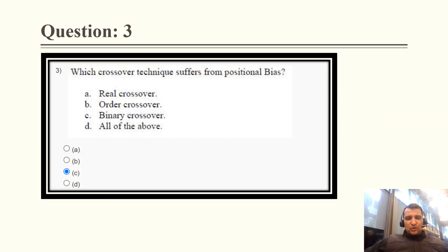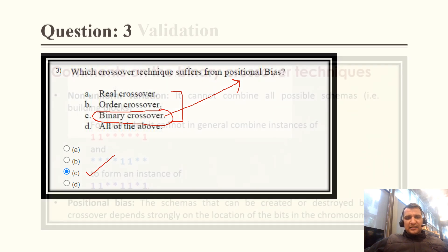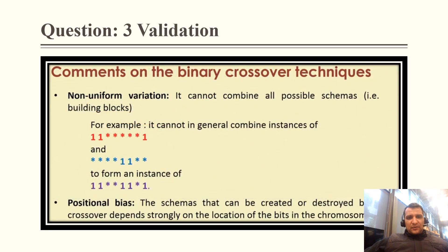Question 3: Which crossover technique suffers from positional bias? There are various types of crossover techniques. Out of them, the binary crossover technique is the one that suffers from positional bias. So the correct option is C — binary crossover technique suffers from positional bias.